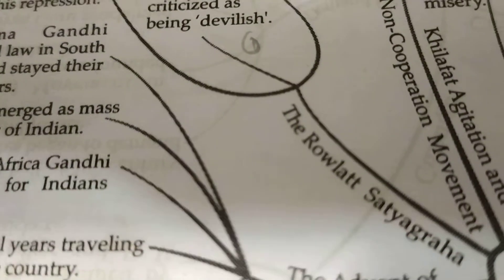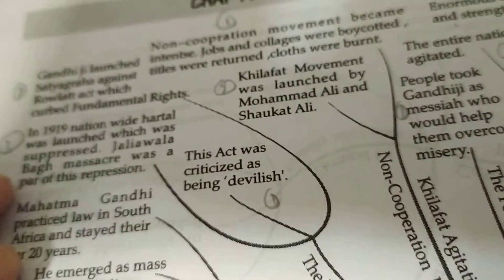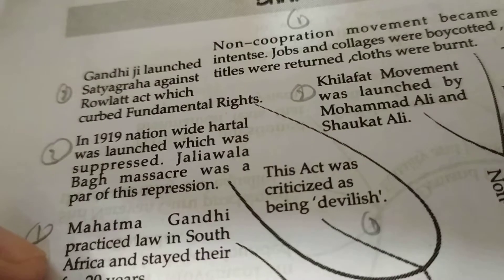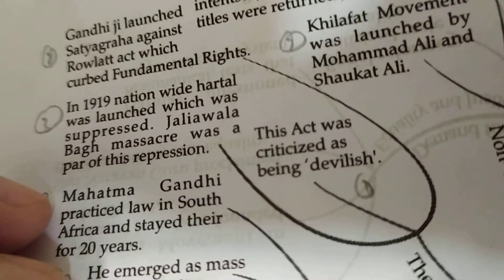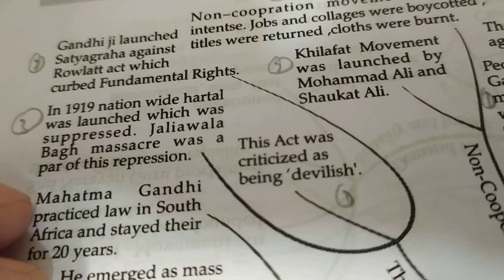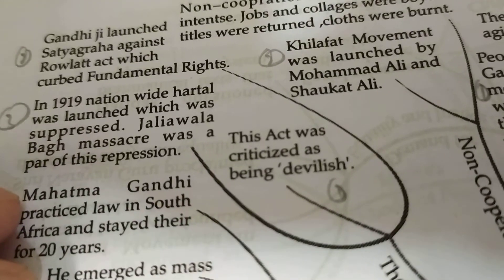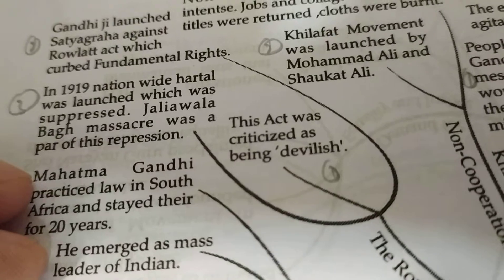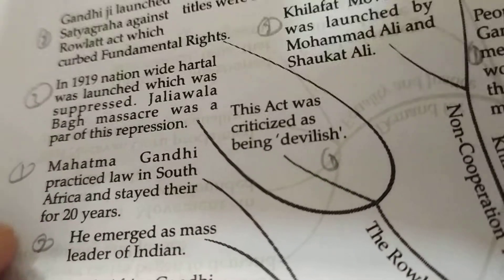Then, the Rowlatt Act was passed, which was criticized as devilish. Gandhi launched a Satyagraha against the Rowlatt Act, which grew up to uphold fundamental rights. In 1919, a nationwide Hartal was launched, which was suppressed. The Jallianwala Bagh massacre took place in 1919, when General Dyer ordered people who had gathered for a peaceful protest to be fired upon. Thousands of people died and many were injured.